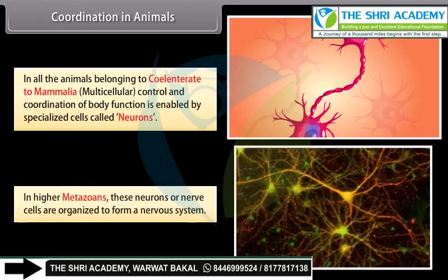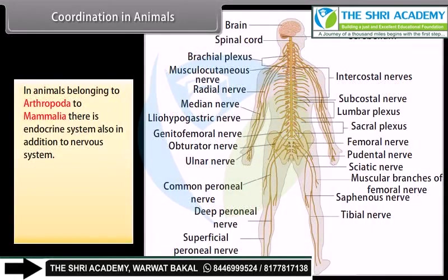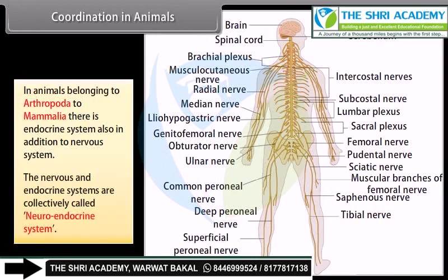In higher metazoans, these neurons or nerve cells are organized to form a nervous system. In animals belonging to arthropoda to mammalia, there is an endocrine system also in addition to the nervous system. The nervous and endocrine systems are collectively called the neuroendocrine system.